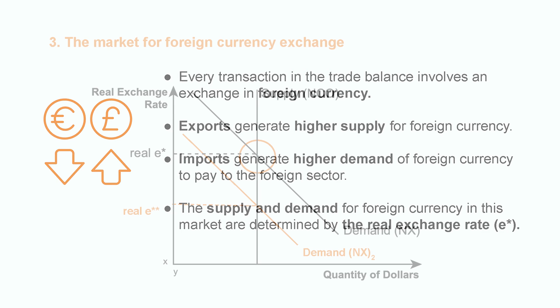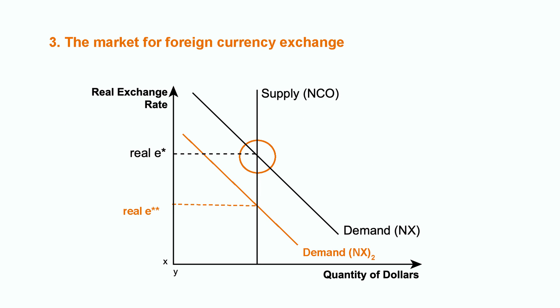The supply and demand for foreign currency in this market are determined by the real exchange rate, represented as E-star. Constructing the market for foreign currency exchange, we can observe that the real exchange rate is the price that balances supply and demand. In an open economy, the supply for foreign currency is considered as given, so it's a vertical line. However, the demand for foreign currency is negatively related to the real exchange rate, because a rise in the real exchange rate means that exports are relatively more expensive and less attractive to foreign and domestic buyers, causing NX to fall. In other words, the more expensive the foreign currency gets, the less the quantity demanded.